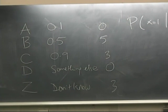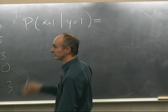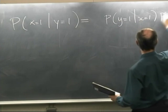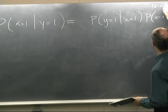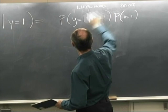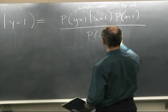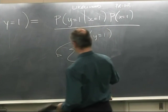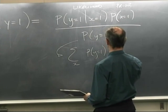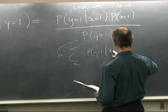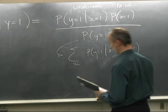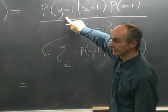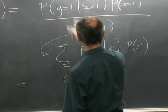What's the probability that the input was a one given we see an output that's a one? We write down Bayes theorem. On the right-hand side we have the prior on the inputs times the likelihood, all divided by a normalizing constant — which is the probability of seeing the output Y=1. The probability of getting a one out when a one was put in is 0.9, since the flip probability is 10 percent. The prior probability of having a one is 0.1.